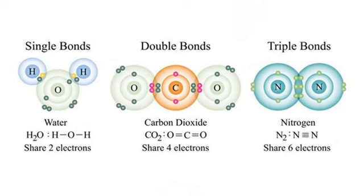In a covalent bond, the shared electrons spend time around both of the bonded atoms, creating a strong connection. Depending on how many electrons are shared, we can get single, double, or even triple covalent bonds.